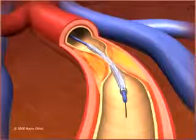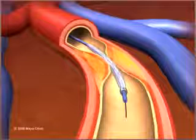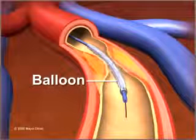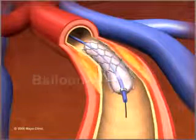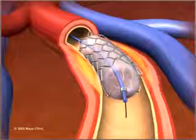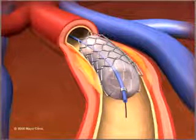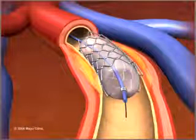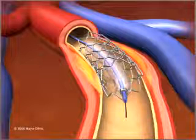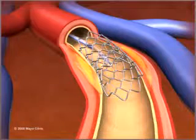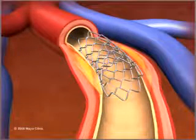When it reaches the narrowed area, a small balloon on its tip is inflated to reopen the artery and flatten the blockage into the artery wall, while at the same time stretching the artery open to increase blood flow to the heart. Both catheters and the wire are then withdrawn.